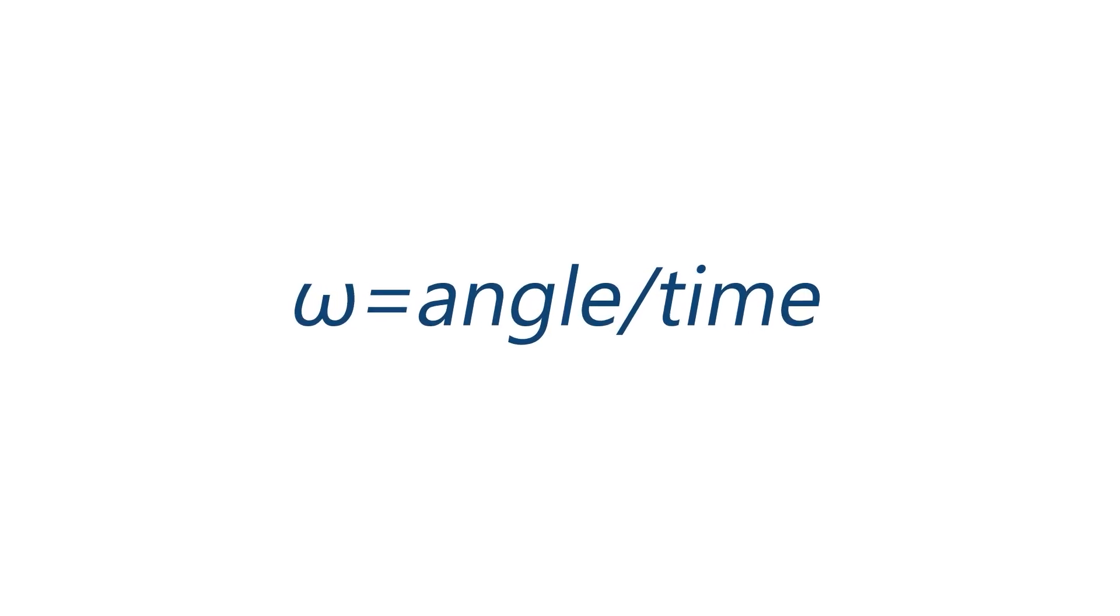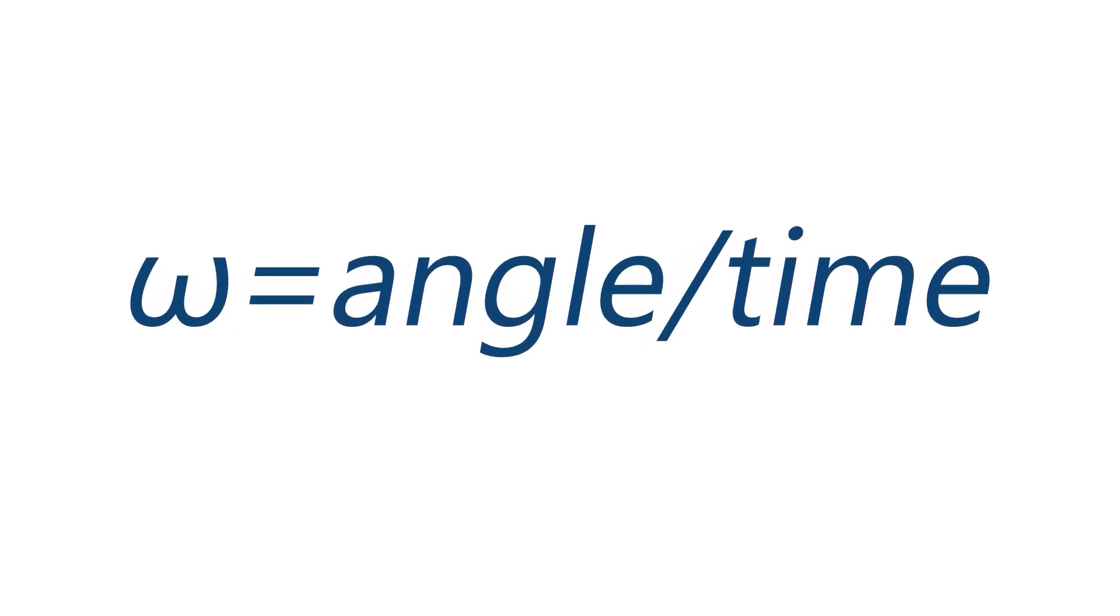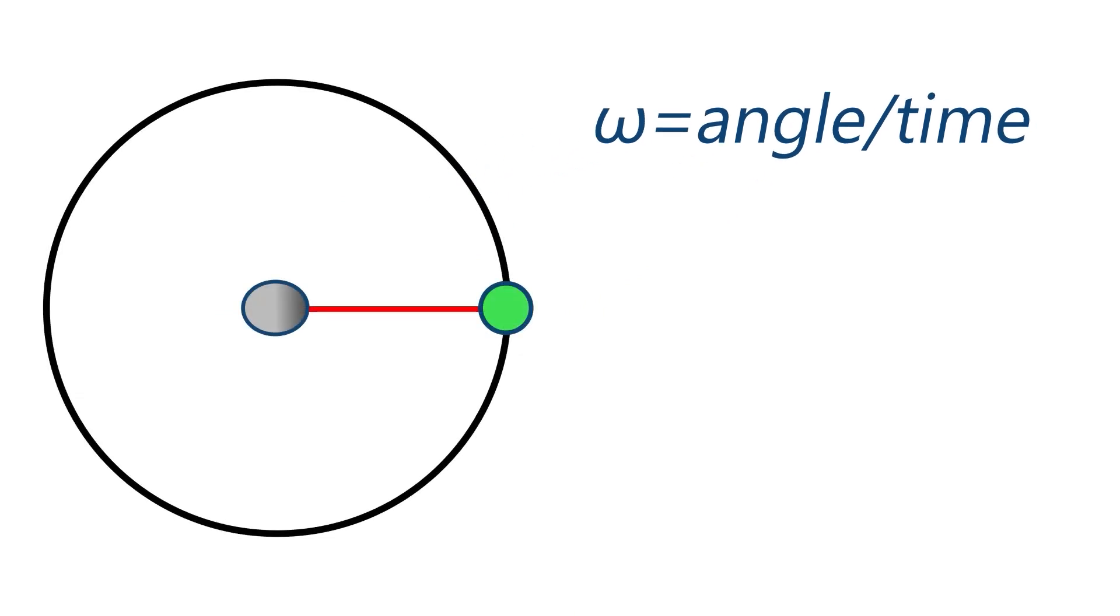Last thing we wrote down then was that omega equals theta the angle moved through divided by the time taken. So remember that in one turn the complete angle that we've moved through is two pi because there are two pi radians in the circle.